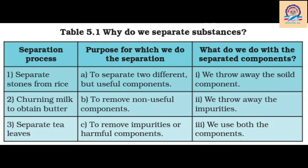The second example is churning milk to obtain butter. Churning is shaking milk or curd to make butter. The purpose is to remove non-useful components and obtain butter. We throw away the impurities and utilize the butter. The third process is separating tea leaves from tea — the purpose is to remove impurities or harmful components, and we use both separated components: tea to drink and tea leaves for medicine, since tea leaves have many medical uses.